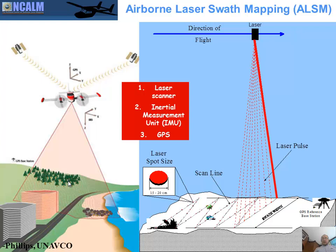First, airborne laser swath mapping, or airborne laser scanning — what is LiDAR? The three parts are laser scanner, inertial navigation, and GPS. It's in an airplane. The laser scanners are very expensive instruments — they cost maybe one million dollars to buy one. Then the airplane itself is around a hundred thousand dollars.